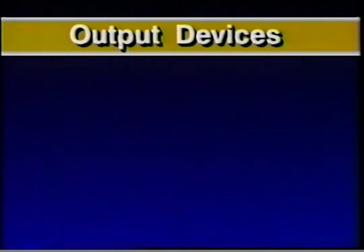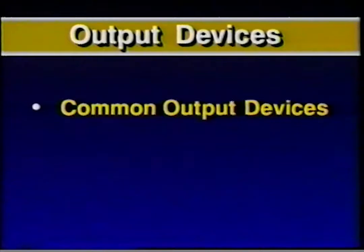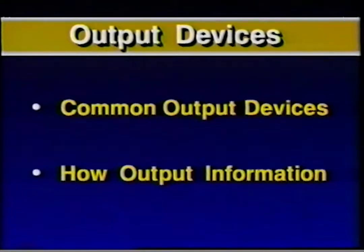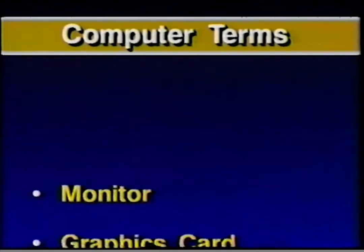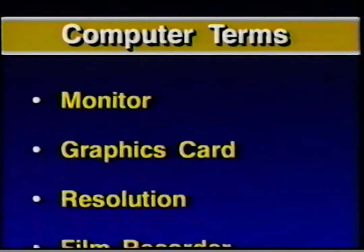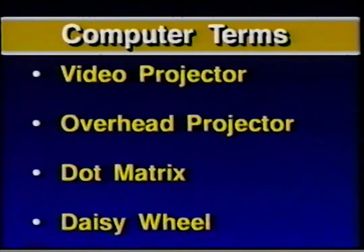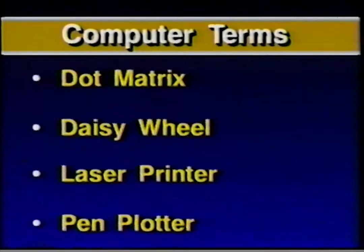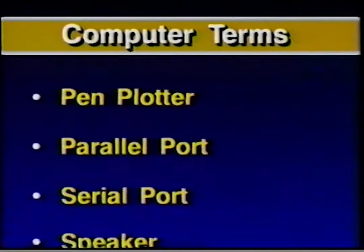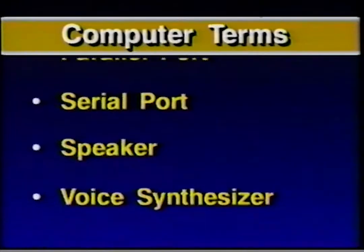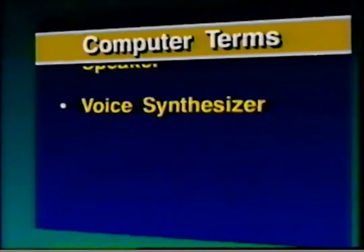In lesson two, output devices, you will learn what the most common output devices are and how they output information. Just as information can be input by touch, sight, and sound, there are devices that can output information using the same senses. We will start with devices that give you output you can see. The most obvious is the computer screen, or monitor. The monitor shows you the information you are working on — it's like a window giving you an instant view of information that has been input or processed.